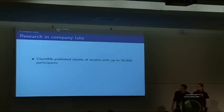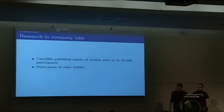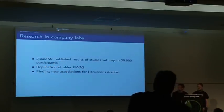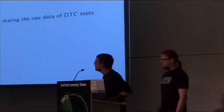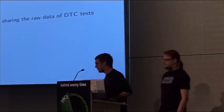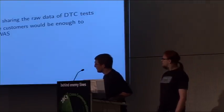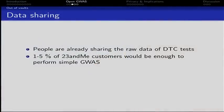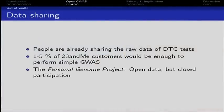There is research going on in these company labs. 23andMe published a couple of studies with up to 3,000 participants. On the one hand, they were able to replicate older studies, which showed that their approach works. On the other hand, they found a couple of new associations for Parkinson's. People are already sharing their raw data from these DTC companies with other researchers. About 1 to 5% of all 23andMe customers would be okay with sharing their data. There's one project — the personal genome project — which is open data but closed participation, so not everybody can participate.